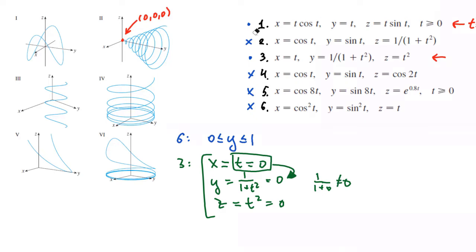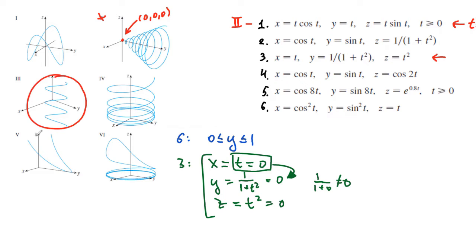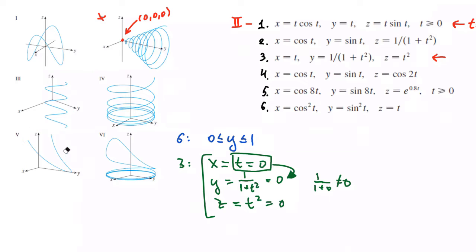We're done with the first graph. We can conclude that graph number 2 corresponds to equation 1. Now let's figure out the other graphs. Looking at the remaining graphs, some are unbounded and the only bounded graphs are this one and this one over here.